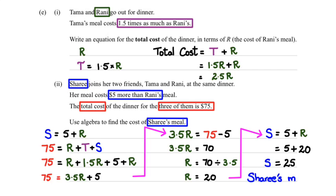So just write a little statement, Shari's meal costs $25. And that's how you do this problem. Alright guys, that's it. Thanks for watching.